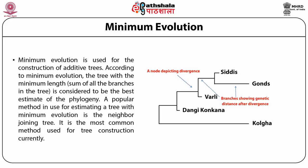A popular method for estimating a minimum evolution tree is the neighbour joining tree, which is the most common method used for tree construction currently. As shown in the figure, the neighbour joining tree shows the genetic relatedness between five Indian tribes — Siddhis, Gaunts, Varli, Dangi, Konkan, and Kolkha — at the DRD2 gene. Siddhis and Gaunts are most closely spaced compared to Siddhis and Varli, suggesting genetic closeness between Siddhis and Gaunts. A node depicts a point of divergence and can be considered a hypothetical ancestor. The node shown is a hypothetical ancestor of the Varli, Siddhis, and Gaunt tribes.